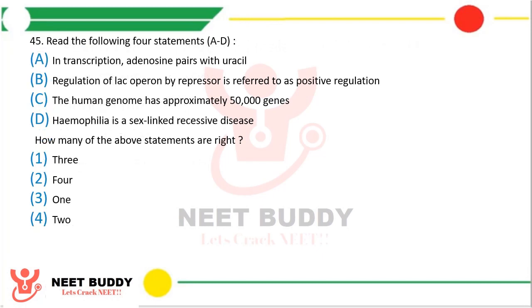Question number 45. Read the following four statements: In transcription, adenine pairs with uracil. Regulation of lac operon by repressor is referred to as positive regulation. The human genome has approximately 50,000 genes. Haemophilia is a sex-linked recessive disease. How many of the above statements are correct? The correct answer is option 4 — two of the above statements are correct.